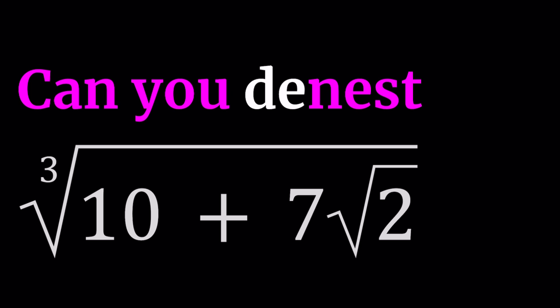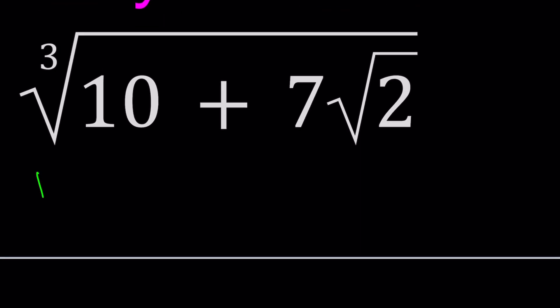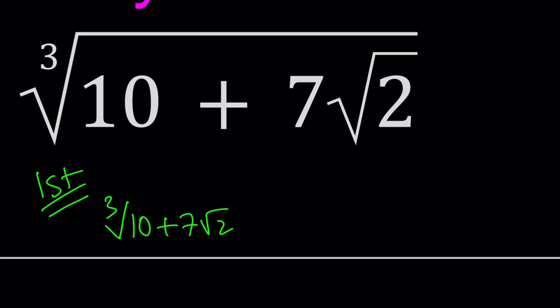One of the methods may not be conclusive, as you'll see. For my first method, since I'm going to try to denest it, I want to be able to write the result as a + b√2. In other words, if I take a + b√2 and cube it, that should give me 10 + 7√2.